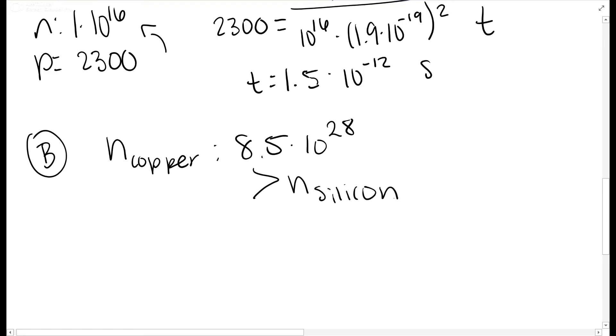When looking at the answer options, A and B state that n is bigger for copper than silicon, which is obviously true. C and D are wrong because they say n is smaller for copper than silicon.